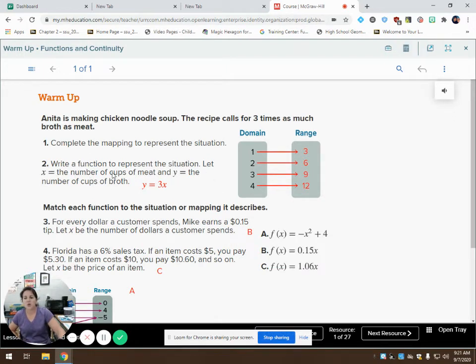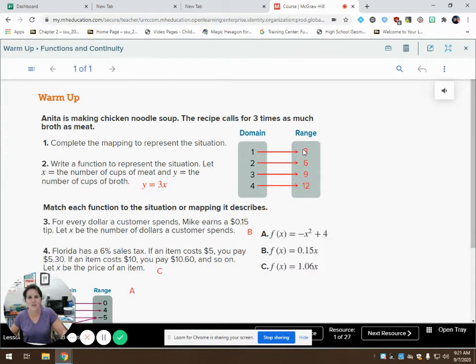So then it asks us to write a function to represent the situation. And we came up with y equals three times x. If you plug in each x value, like right here, my x is one. So three times one gives me a y value, or my range value of three.